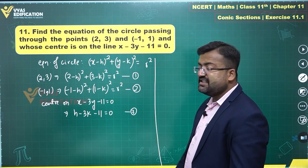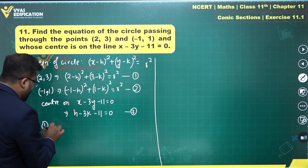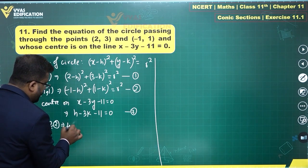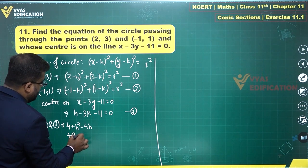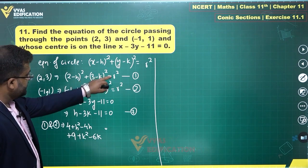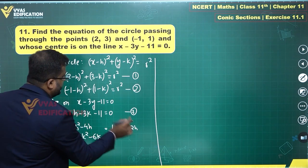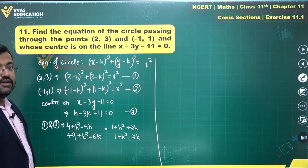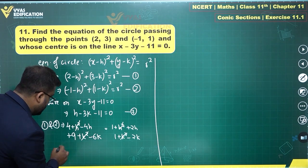From equations 1 and 2, we can eliminate r squared. Equations 1 and 2 tell me that the left-hand sides are equal to each other. Expanding: 4 plus h squared minus 4h plus 9 plus k squared minus 6k equals 1 plus h squared plus 2h plus 1 plus k squared minus 2k. The h squared and k squared terms cancel out.